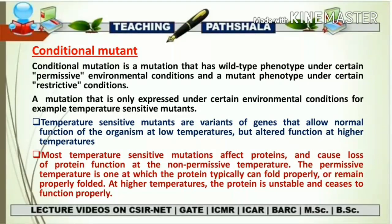The first topic of discussion is about the conditional mutants. A conditional mutant is a mutation that has a wild-type phenotype under a certain permissive environmental condition and a mutant phenotype under certain restrictive conditions. Permissive condition is the normal condition in which the overall metabolism of a particular organism remains normal — like our body temperature of 37 degrees Celsius. Restrictive condition is one that is unfavorable for the organism, against the environment in which it used to persist.